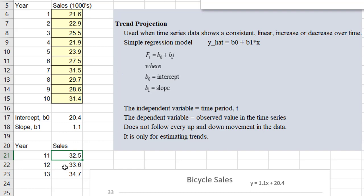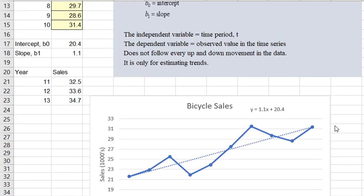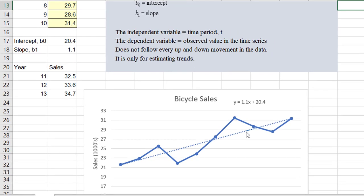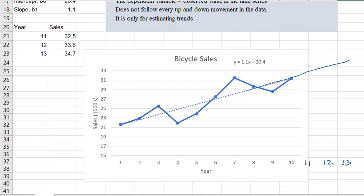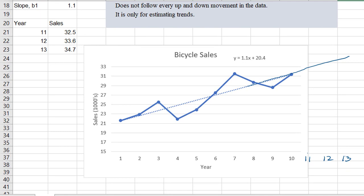So here are the forecasts. Remember these sales forecasts are the result of projecting, extrapolating the trend line into the future. So it's kind of like extending it like this, now for years 11, 12, and 13. So here, and here, and here.